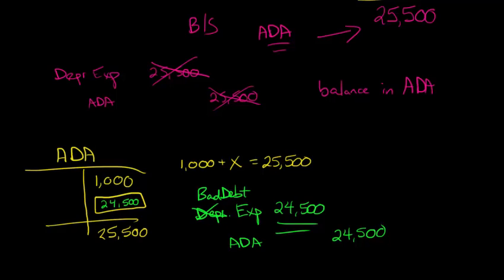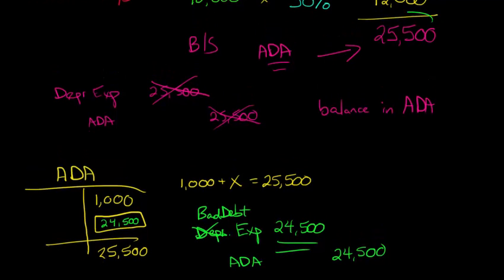So again, it's not going to be the 25,500, because what we're actually calculating when we do that aging is what the ending balance of this allowance for doubtful accounts should be. But we already had a beginning balance there, so we need to account for that, right? If we had just credited ADA for 25,500, then we'd be adding it to the 1,000 that was already there, and we'd be overstating this allowance for doubtful accounts.